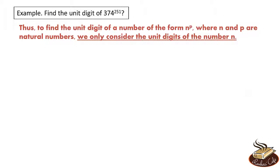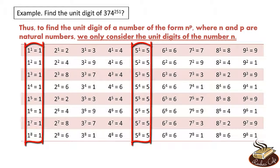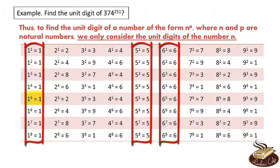Now take a look at the following table. As you can see, the unit digit of 1, 5, or 6 raised to any power is always 1, 5, and 6 respectively. For example, 1^5 is 1, 1^8 is 1. Similarly, 5 raised to any power is always 5, and 6 raised to any power is always 6.